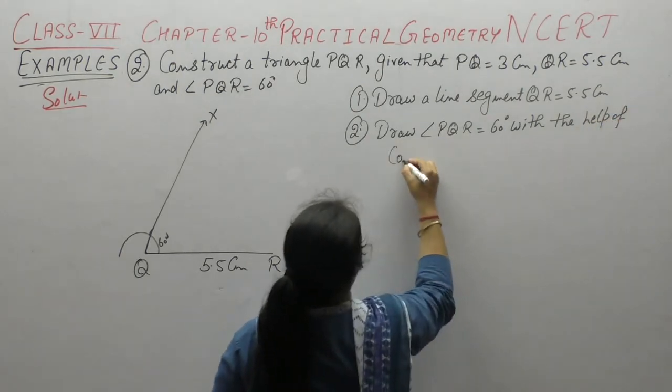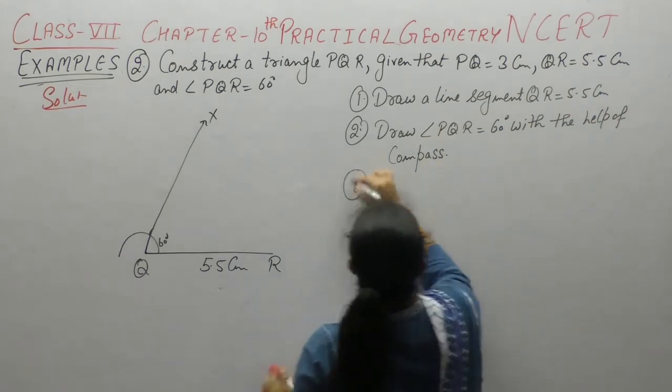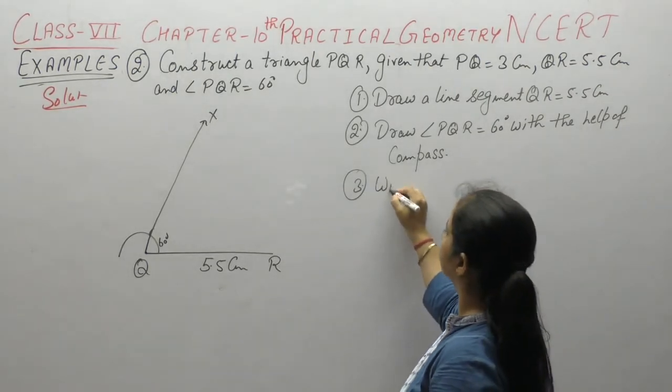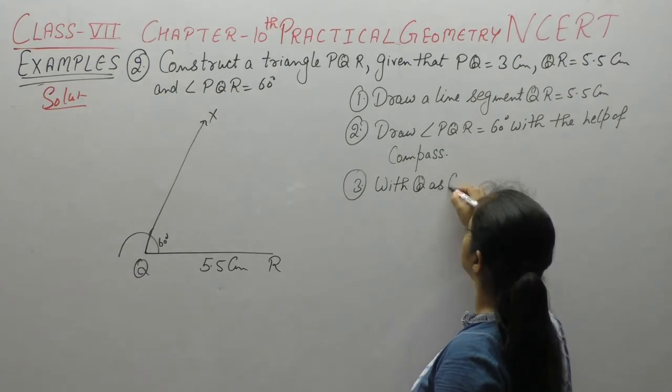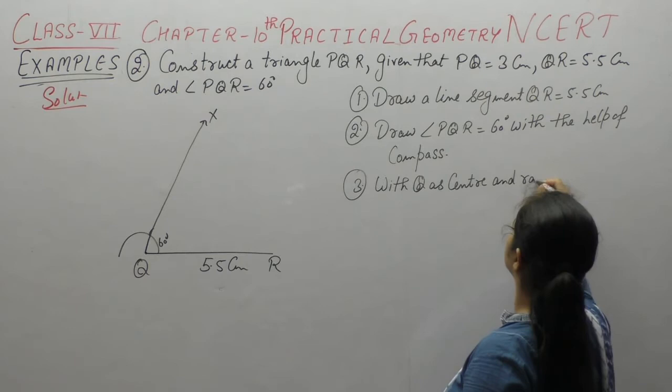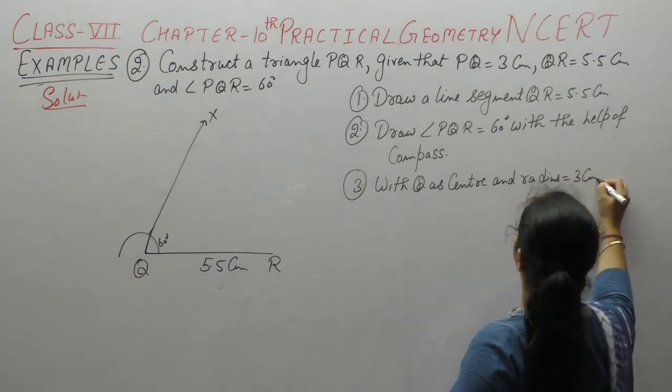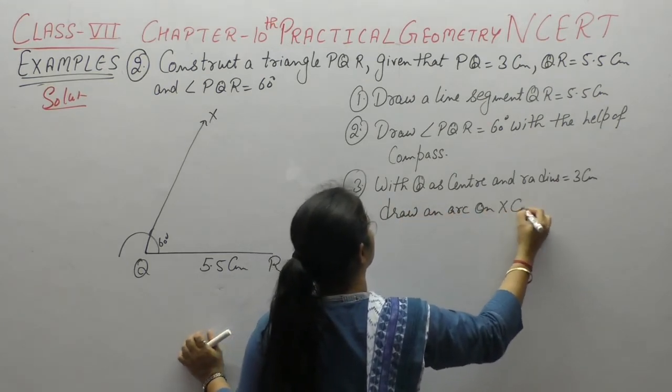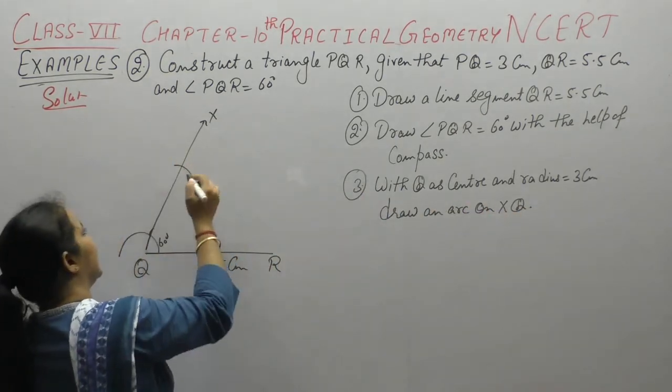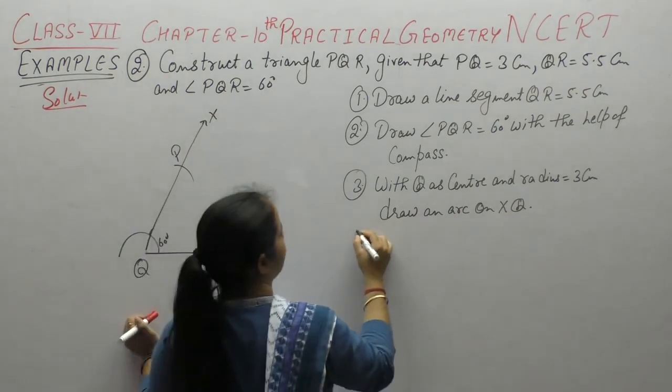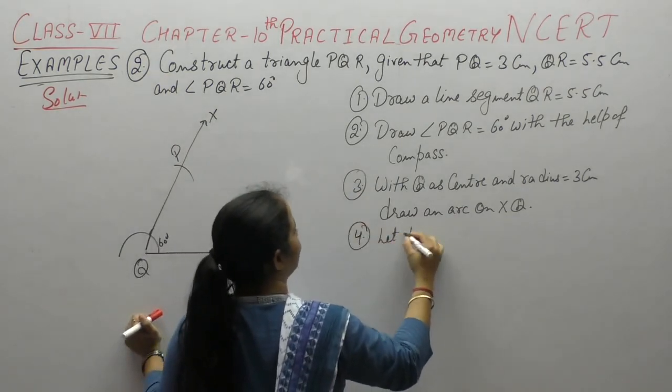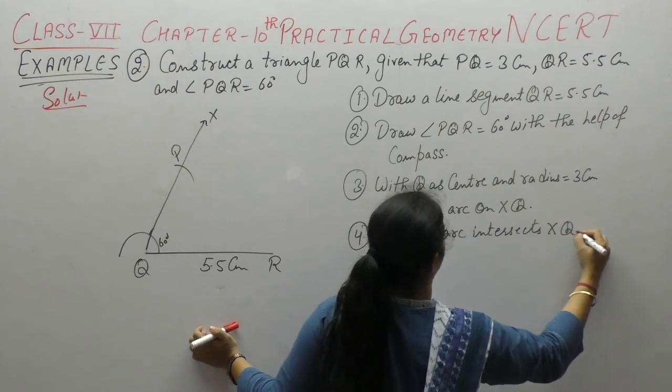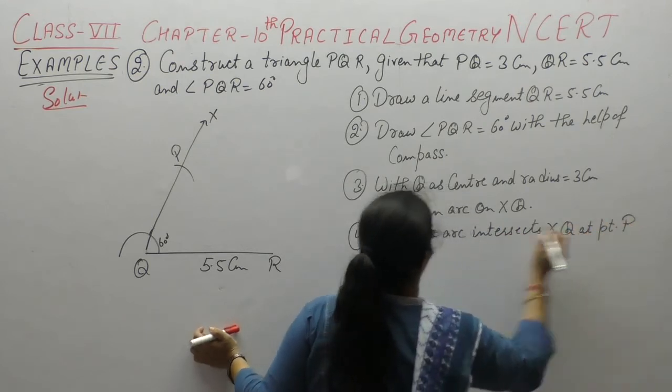We have now drawn the angle. Next point kya hai? Next term me diya hai PQ is 3. To Q ko center maan ke, with Q as center or radius kitna, 3 cm, draw an arc on XQ. 3 cm ki arc lagai, isse naam diya P. Let this arc intersect XQ at point P.